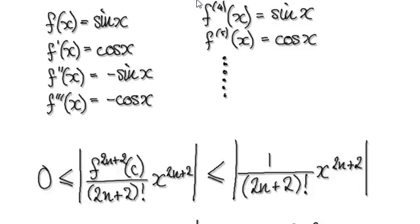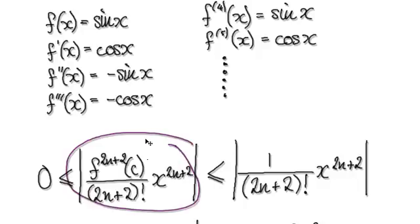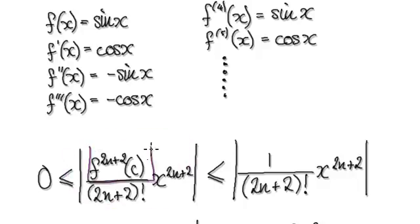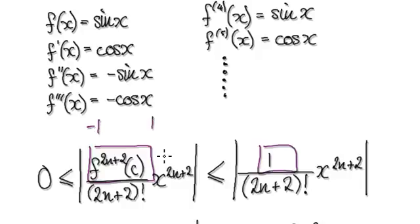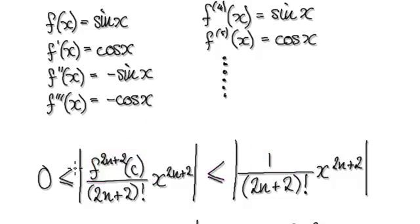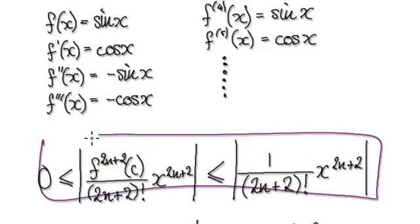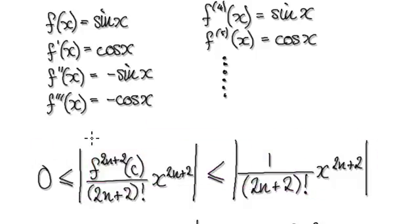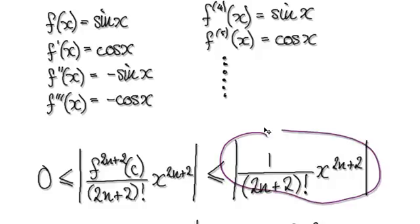So what that means is this thing here — this is our remainder — well, this block here is always trapped in between negative 1 and 1. So you can be sure that the biggest value this thing here could be is 1. So it's got to be less than or equal to this thing here.